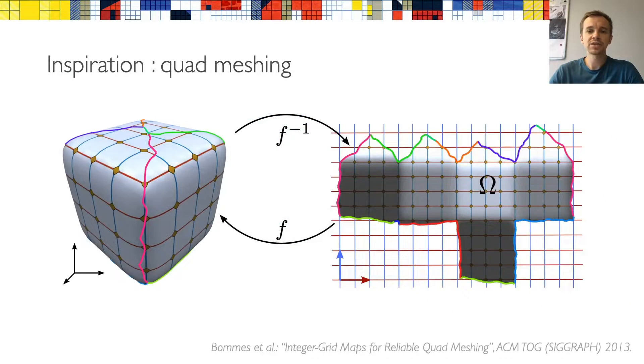To formulate vectorization as parameterization, we took inspiration from quad meshing, where seamless global parameterizations are used to define a quad structure over an input surface mesh. Even though our goal is different, we use the same building blocks, which we adapt for our specific problem. In quad meshing, the edges of a quad mesh are often aligned with sharp features, while we align them with the input strokes.